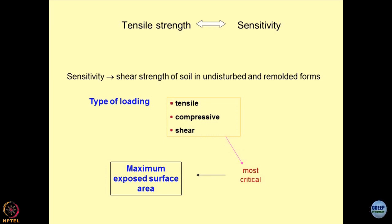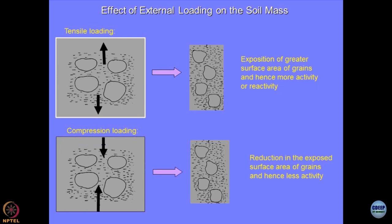To understand how exposed surface area influences the tensile strength of the material, we have to go into the micro-mechanics of the system. Starting with tensile loading or compressive loading on grains in the soil mass: if you stretch it, all the particles get repelled from each other. In other words, each particle is now free to exhibit 100% of its surface area to the environment. This is the case when tensile loading causes exposure of the grains to the environment. The more you stretch the material, the particles get stretched out and are free to interact with the environment.